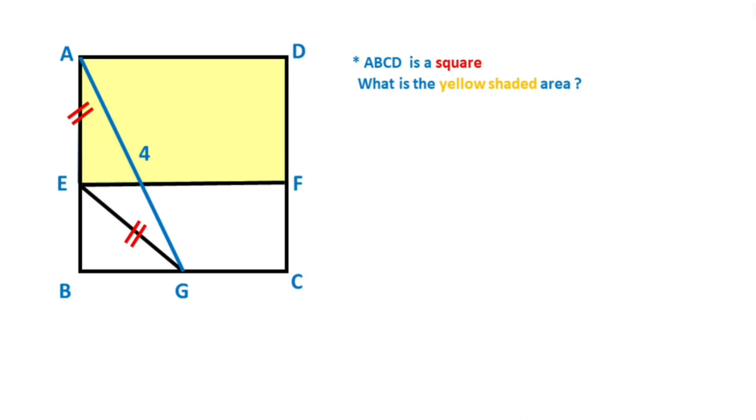Hello everyone, in this video we have one square and these two sides are given equal. The length of AG is given 4 units and this yellow shaded area is what we need to find.